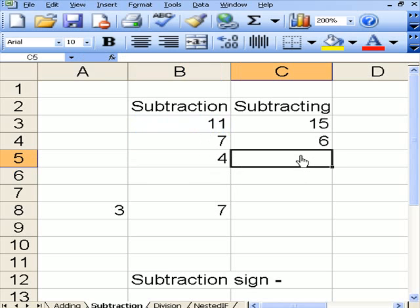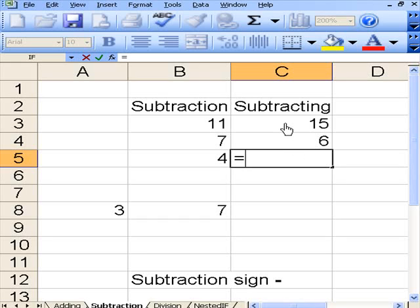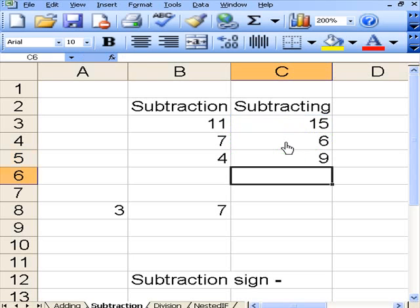Let's do that again. You put your equals sign in, press the first part of your sum, write your minus sign, click on the second part of your sum and press enter. It doesn't matter whether you do it vertically or horizontally.